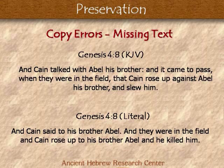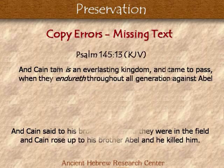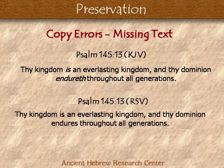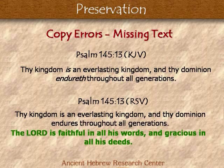There are some restorations we can be sure of, like Psalm 145:13. In the King James you read: 'Thy kingdom is an everlasting kingdom, and thy dominion endures throughout all generations.' But in the NIV or RSV you get an additional sentence: 'The Lord is faithful in all his words and gracious in all his deeds.' The RSV and NIV are fairly recent — after the Dead Sea Scrolls were found. The Dead Sea Scrolls are Hebrew manuscripts that help correct the text and give us better understanding.